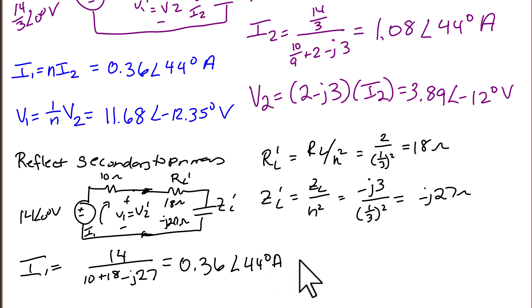Now we're going to find V1. V1 is equal to 18 minus J27 times I1. So V1 is equal to 11.68 with an angle of negative 12.35 degrees in volts, exactly what we got before.